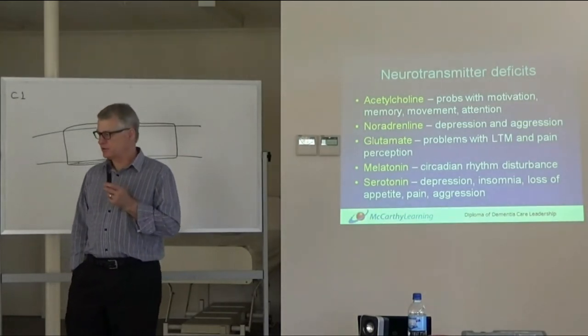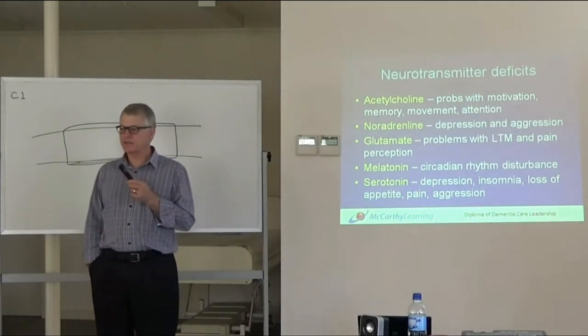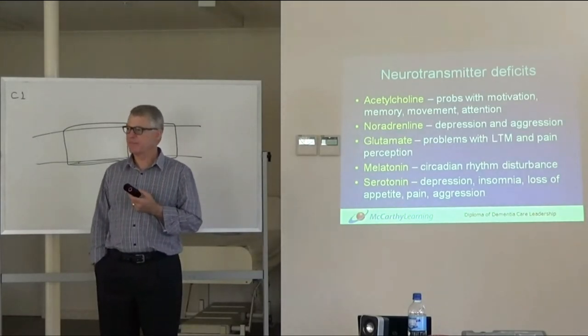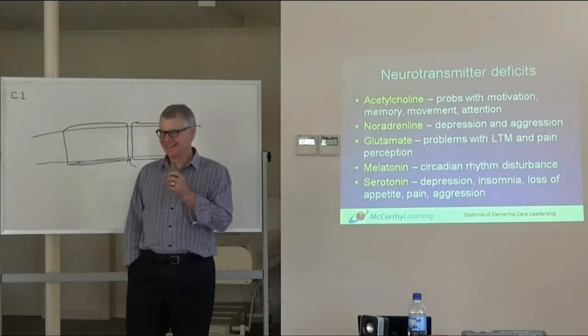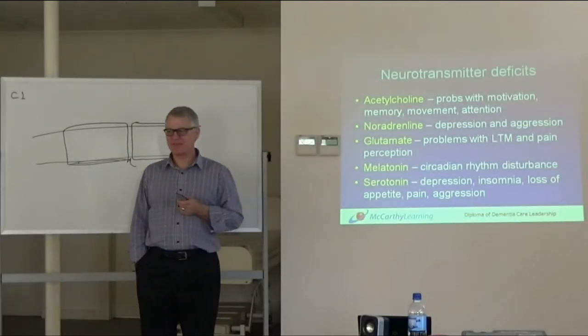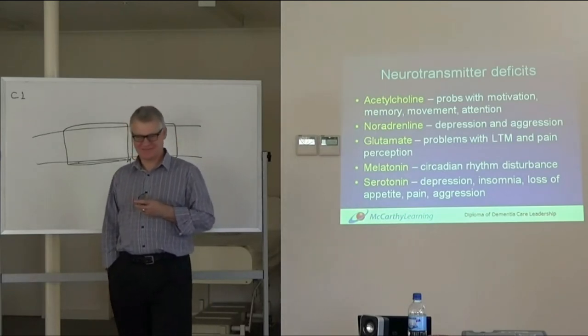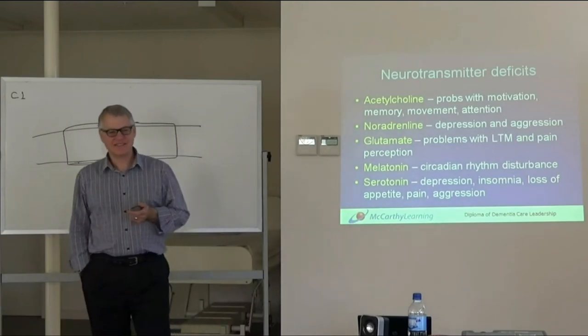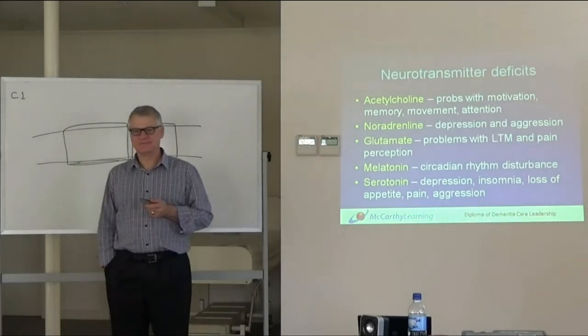Can anyone tell me the names of the drugs that you sometimes see residents on that are given to slow down the progress of Alzheimer's disease? Students respond with Aricept and Remanel. The instructor asks about the fourth one but can't remember. Those four drugs are designed to top up acetylcholine.